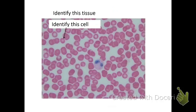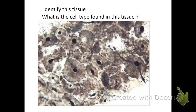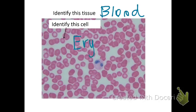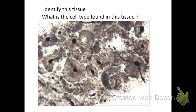Take a second and try to answer that. This is blood. It's a connective tissue, and the cell is an erythrocyte, or a red blood cell. We'll write erythrocyte. Make sure you know how to spell erythrocyte. Go over that one.